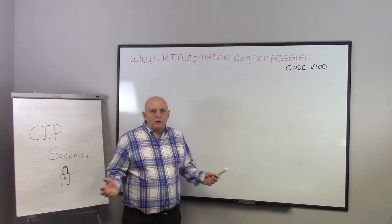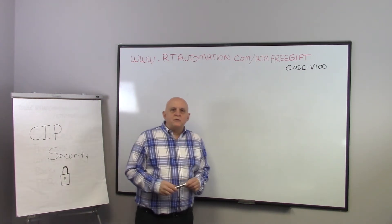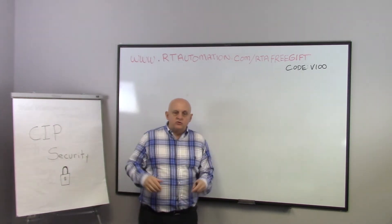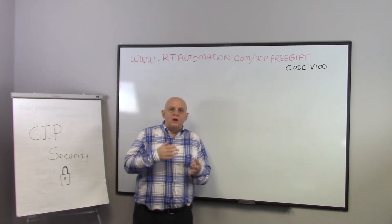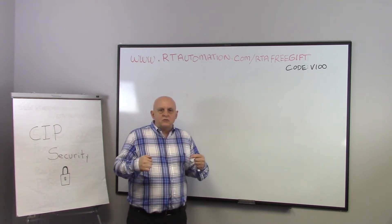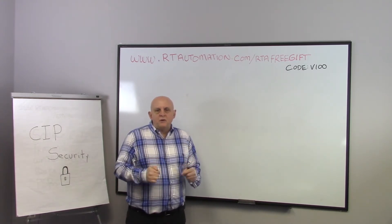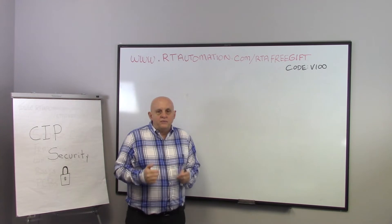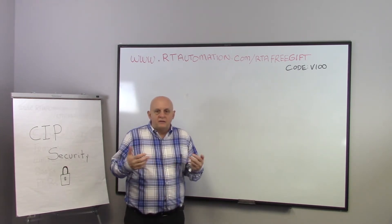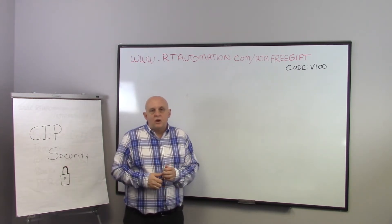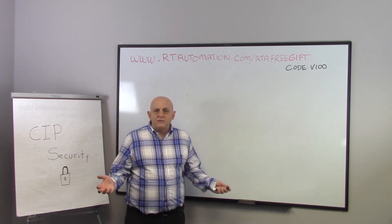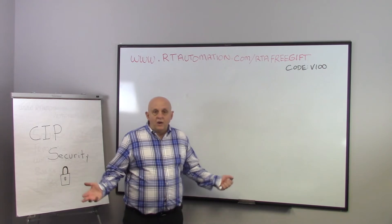Why do we care? Well, over the years we've done a lot to secure what we call the north side of the controller — the enterprise, the internet, the cloud. Getting to a controller through those directions has typically gotten a lot harder. We've added defense-in-depth strategies, a lot of security software, a lot of capabilities there. But what we haven't secured is the IO networks.